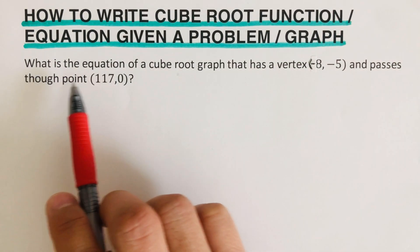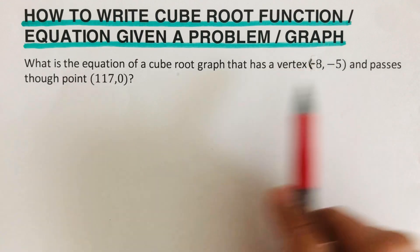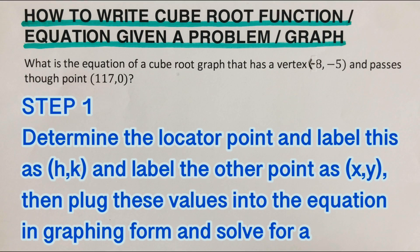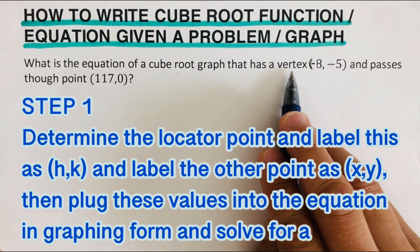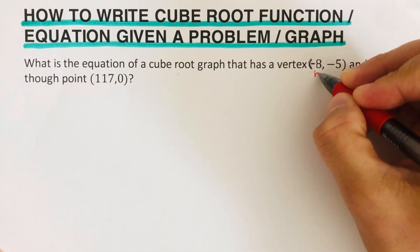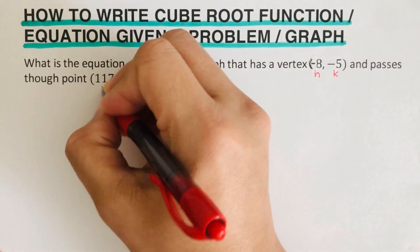Let's take this first example. What is the equation of a cube root graph that has a vertex of negative 8, negative 5, and passes through point 117, 0? The first step is to determine the locator point and label this as h,k, and label the other point as x,y, then plug these values into the equation in graphing form and solve for a. Our h,k is the vertex — also called the locator point — and this point where the graph passes through is labeled as x,y.